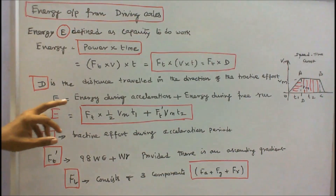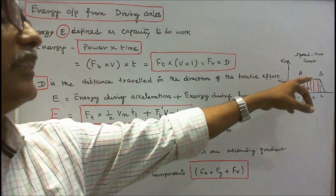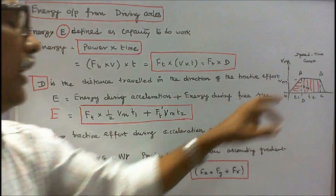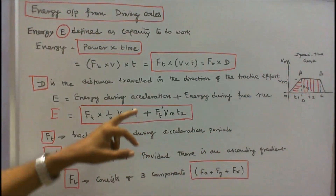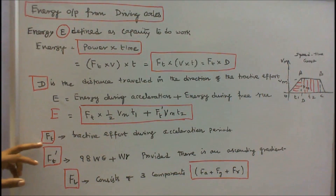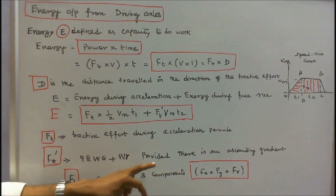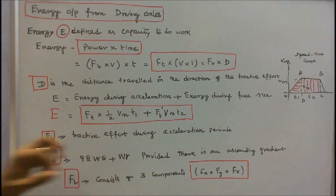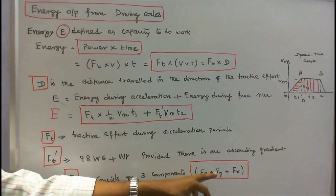E is the energy during acceleration. In the speed-time curve, zero to A is acceleration and A to B is free running. Therefore the total energy is Ft into area OAD, which is R into Vm into T1, plus Ft-dash into area ABCD, which is Ft-dash into Vm into T2. Here Ft is the tractive effort during acceleration. Ft-dash equals 98 into W into G plus W into R, provided there is an ascending gradient. W is dead weight, G is gradient, R is train resistance. Ft consists of three components: F_A plus F_G plus F_R.